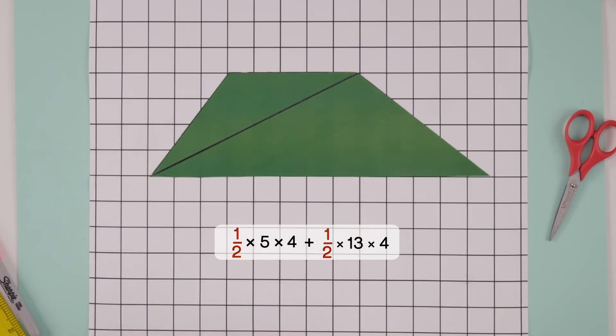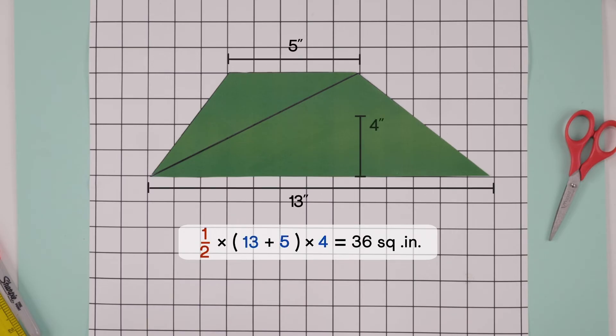We can factor out half times 4. So we'll get the area of the trapezium as half of the sum of its parallel sides times height.